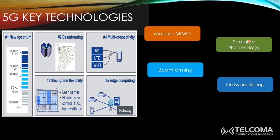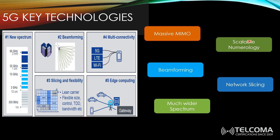Network slicing is only available when you have a 5G core network. You can basically slice or segment your network into different services based on what you are offering your customers. For example, customers needing support for a very large number of low-speed devices have different network requirements from those needing enhanced mobile broadband at very high speeds. Network slicing allows you to give different services, segments, and parameters.